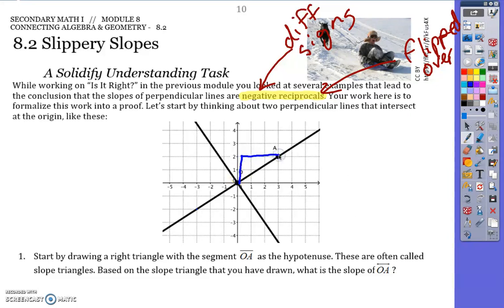These are often called slope triangles. Based on the slope triangle you have drawn, the slope of OA is two-thirds.